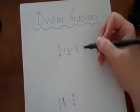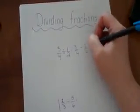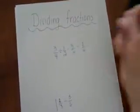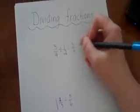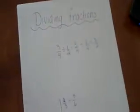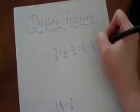3 quarters divided by 2 quarters. Now we have to divide the numerators. So it will be 3 divided by 2 which is 3 over 2 and that is equal to 1 and 1 half.